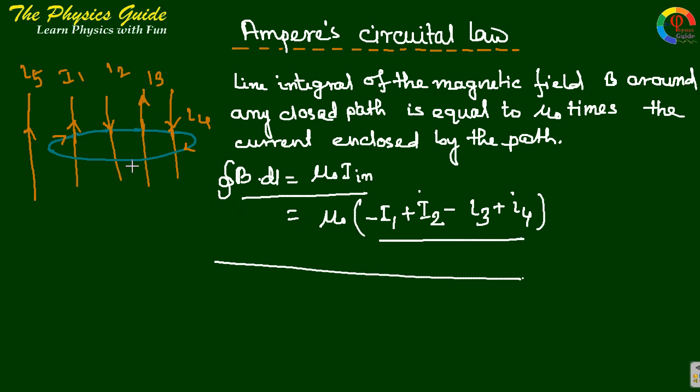If we take the Amperian loop in opposite direction, that is in anticlockwise, then this equation also for this case gives the result mu-0 I1 minus I2 plus I3 minus I4.